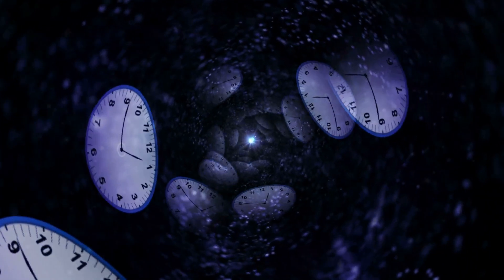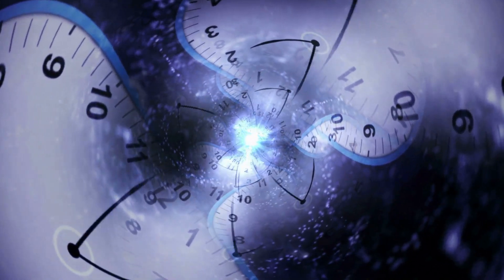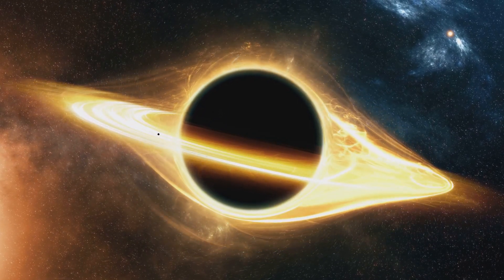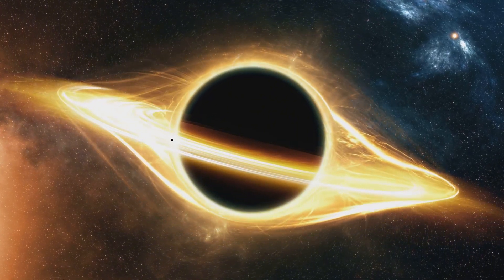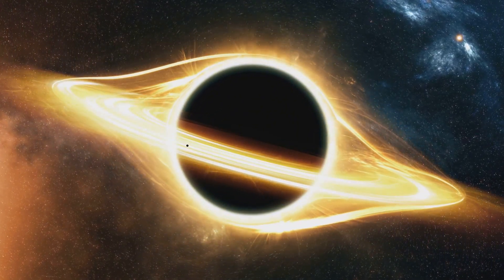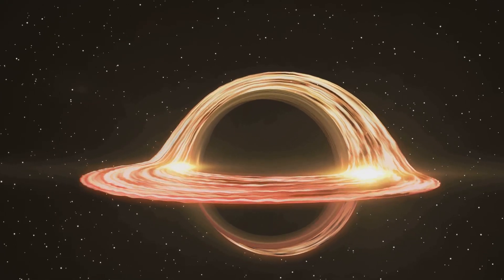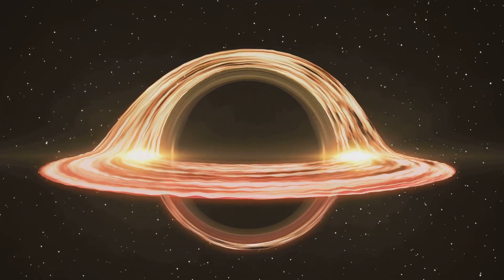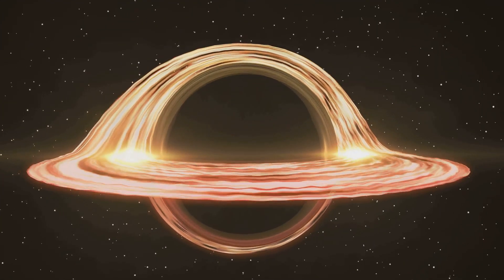General relativity went further, demonstrating that gravity itself can warp spacetime. Massive objects like stars and black holes create distortions in the fabric of spacetime, causing time to slow down in their vicinity.